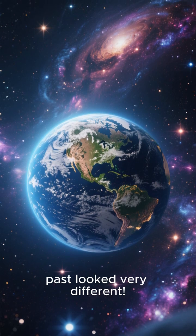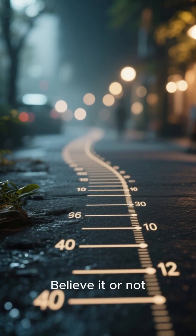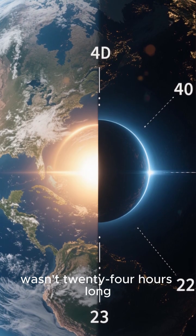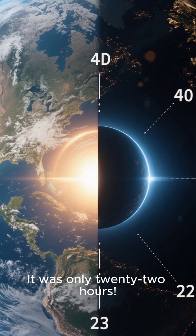Our planet's past looked very different. Believe it or not, about 1.4 billion years ago, a day on Earth wasn't 24 hours long. It was only 22 hours.